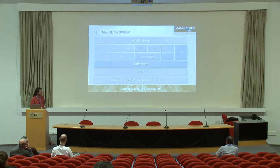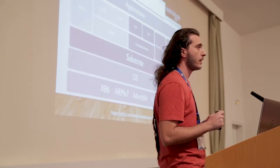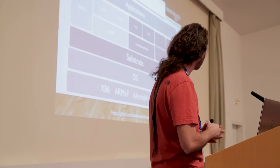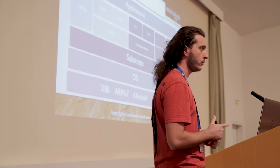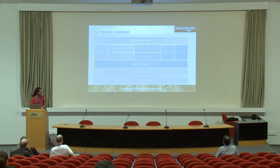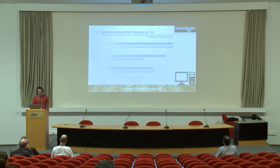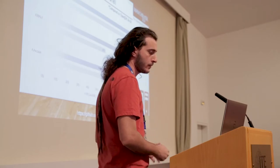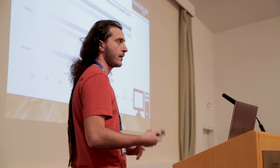Maxine also consists of a substrate thin layer implemented in C, because we cannot implement everything in Java — we need a thin layer to interact with the operating system. Maxine currently runs on both Mac and Linux. There are foundations for running on Windows, but we are not supporting it yet. We have support for x86, ARMv7, AArch64, and are currently working on RISC-V support. Regarding pass rates, Maxine has 100% on DaCapo and SPECjvm for x86. For ARMv7, the numbers are 90% and 60%. For AArch64, a fairly new port, it's 73% and 75%, and we're constantly working on improving these numbers.